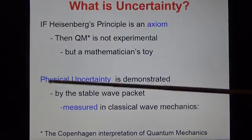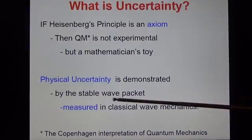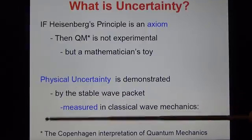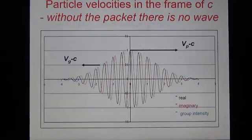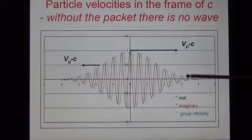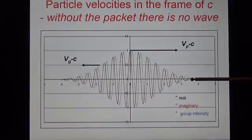By contrast, physical uncertainty is demonstrated by the stable wave packet and measured in classical wave mechanics. Dirac wrote that the wave packet is unstable, but this is a shortcut. The wave packet consists in a carrier wave inside a wave group and the two move at different velocities for a particle.